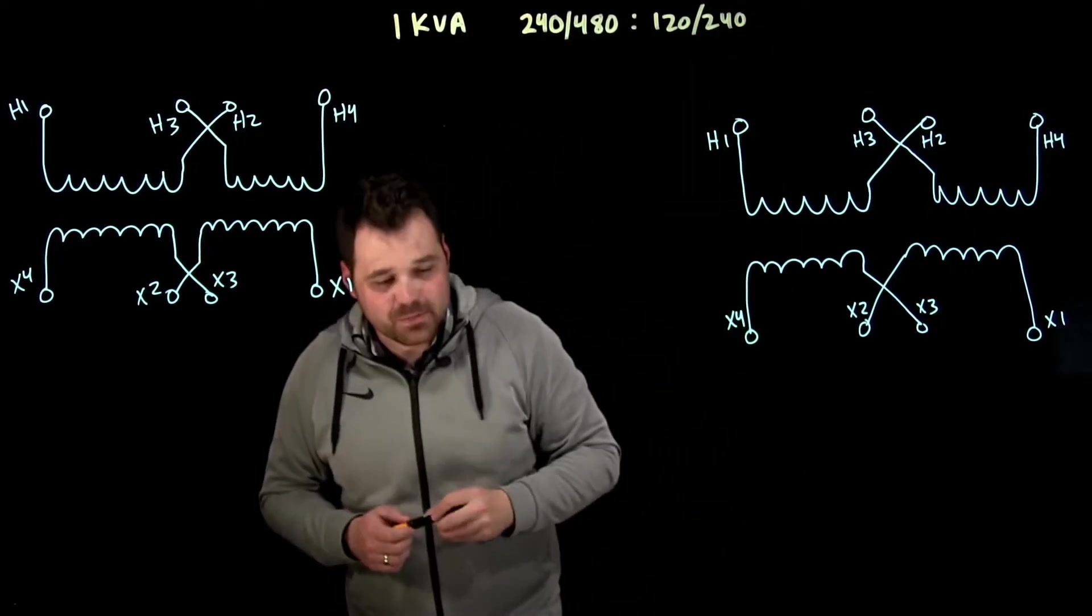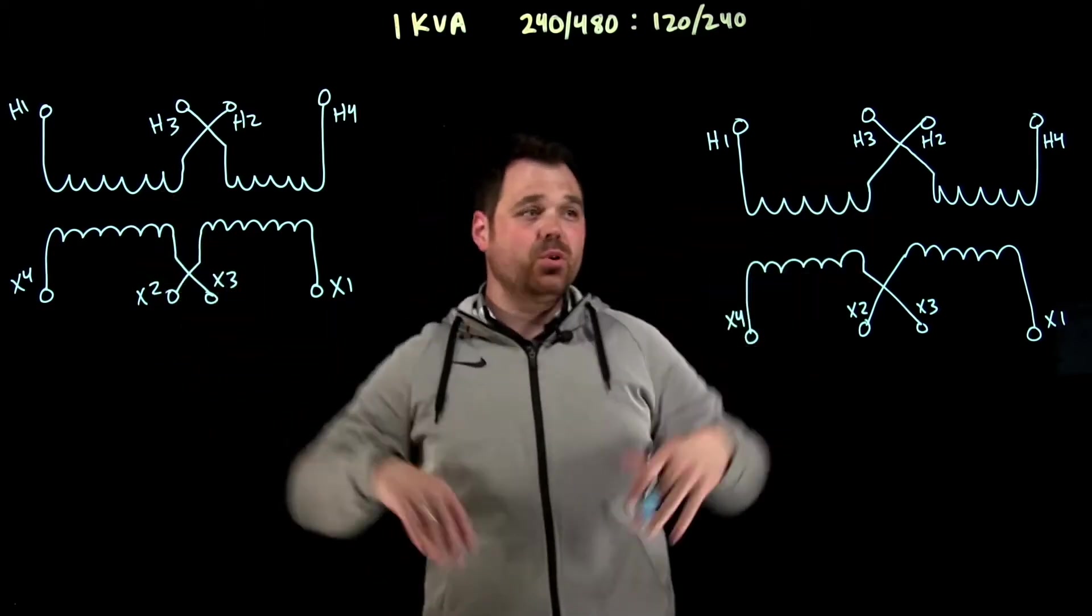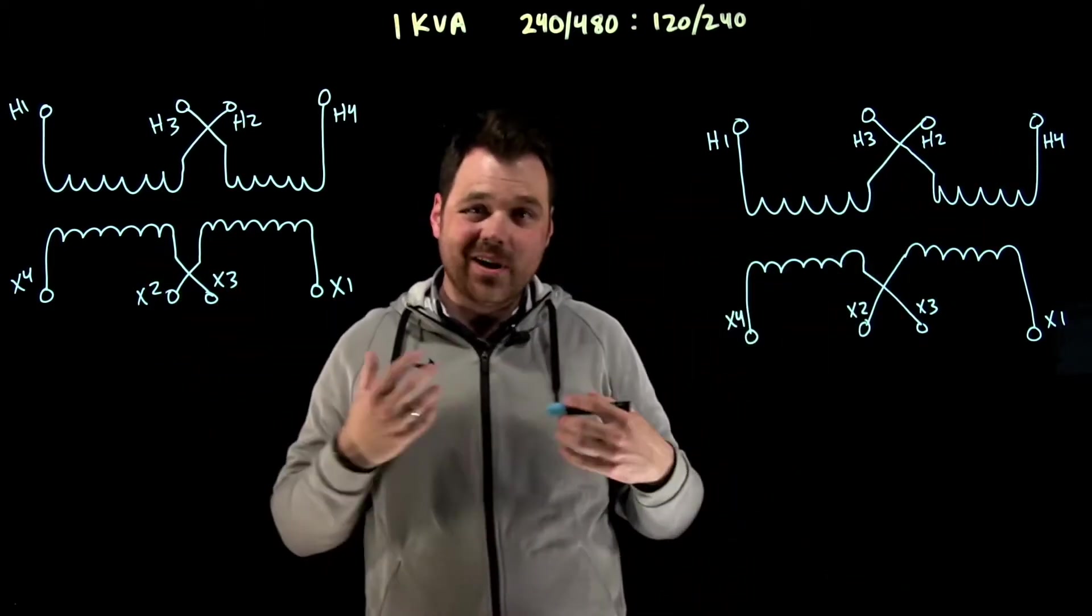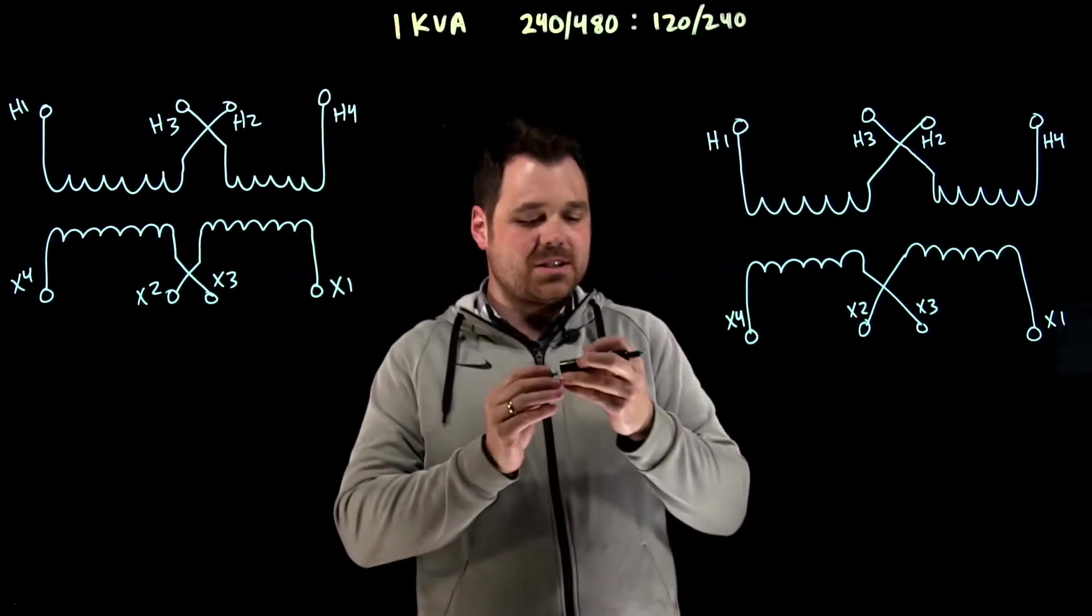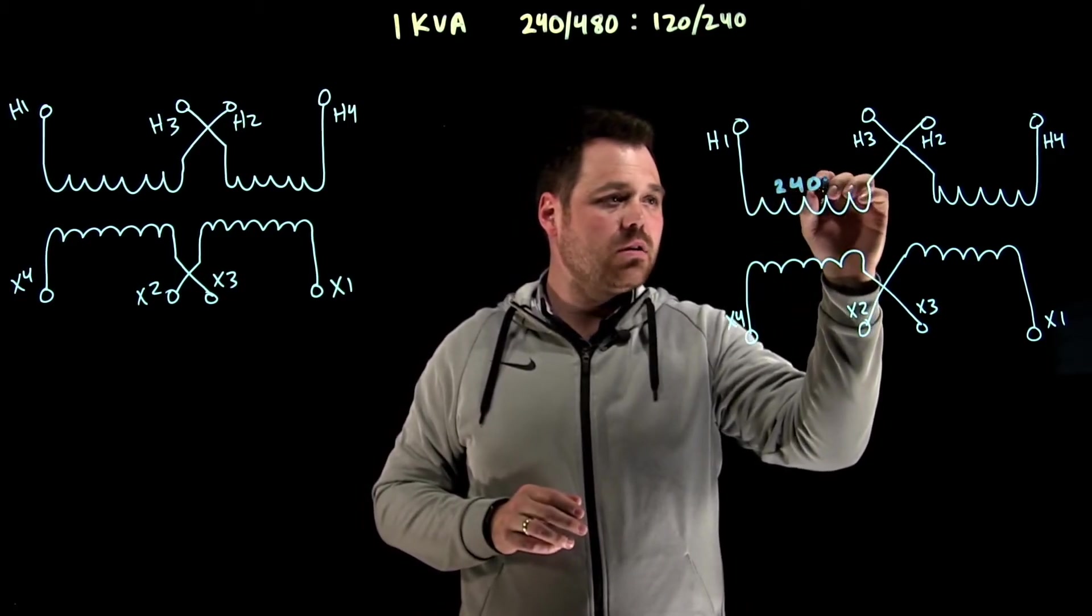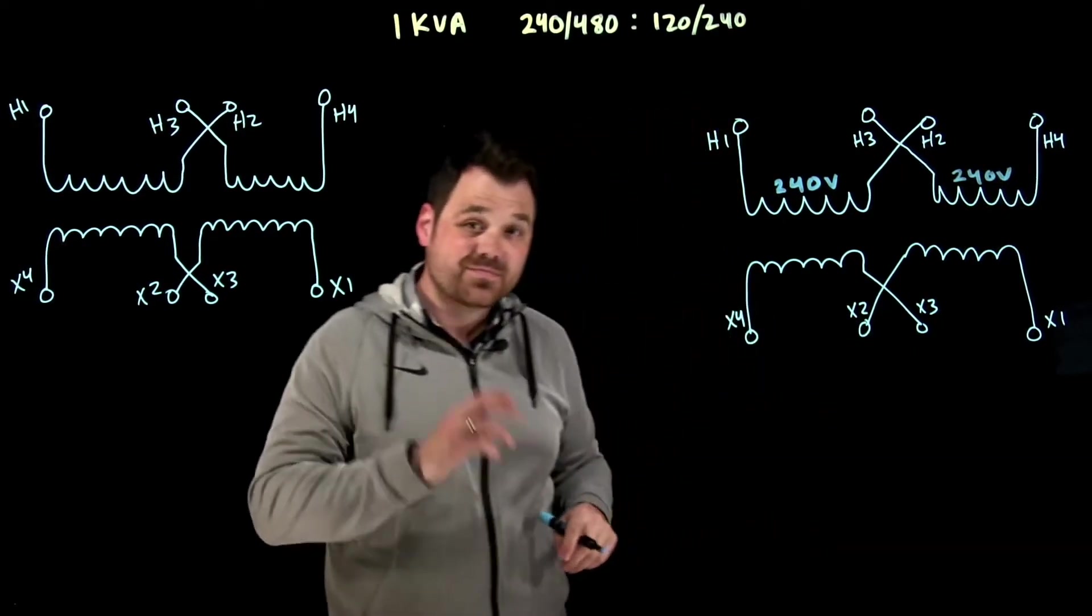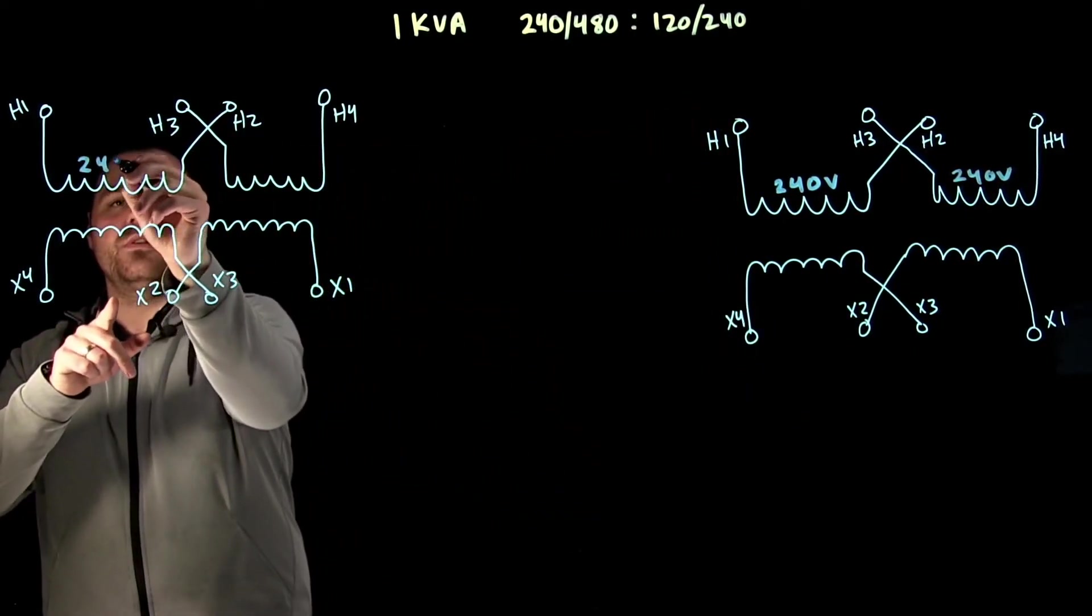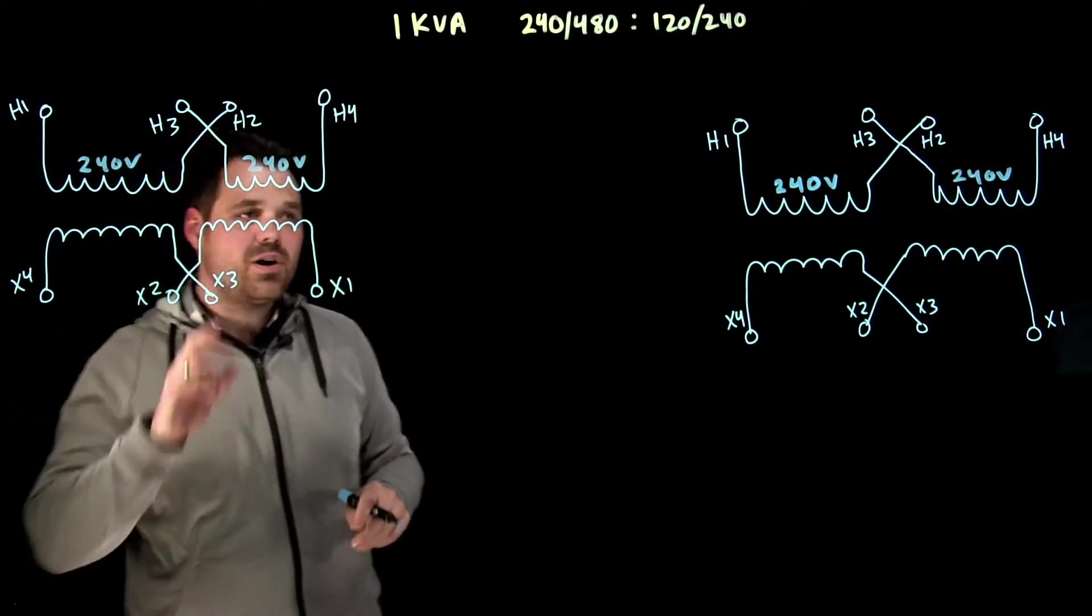Now, what does that mean? Well, that means my H winding, my high voltage winding can be set up as either a 240 or 480. So what that means is that each winding is good for 240 volts, 240 volts. Same over here. Each winding is good for 240 volts, 240 volts.